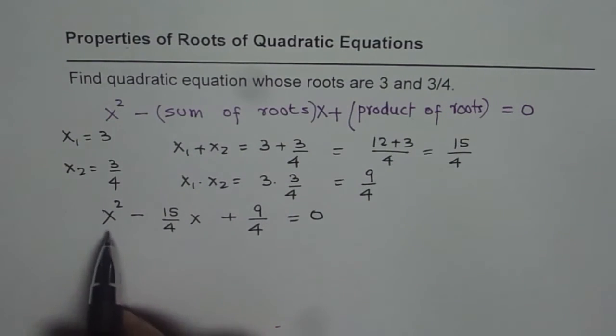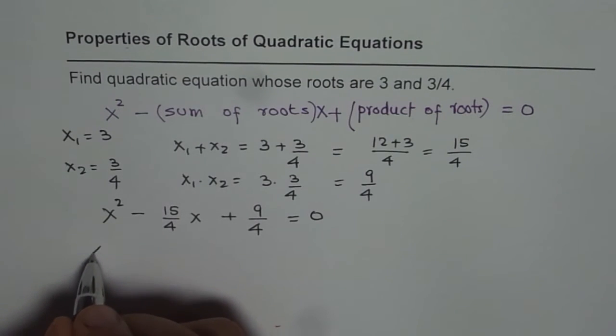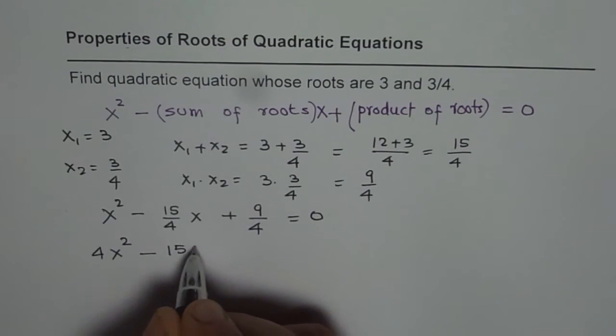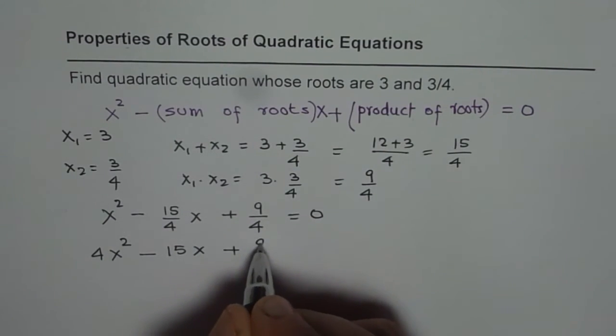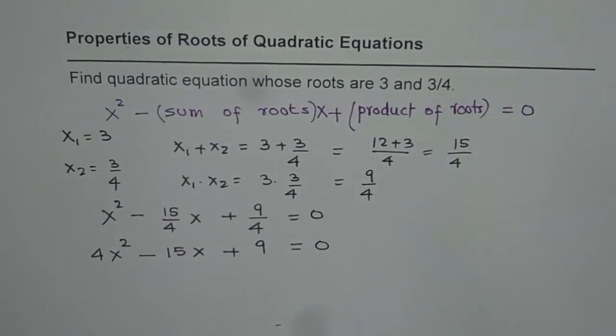You should always write in integer forms. So we will multiply everything by 4 and get the equation as 4x squared minus 15x plus 9 equals to 0.